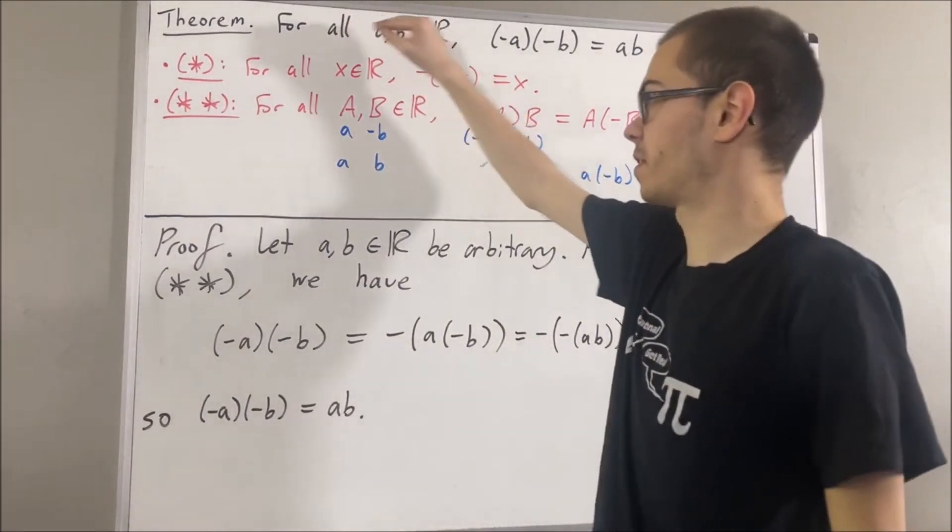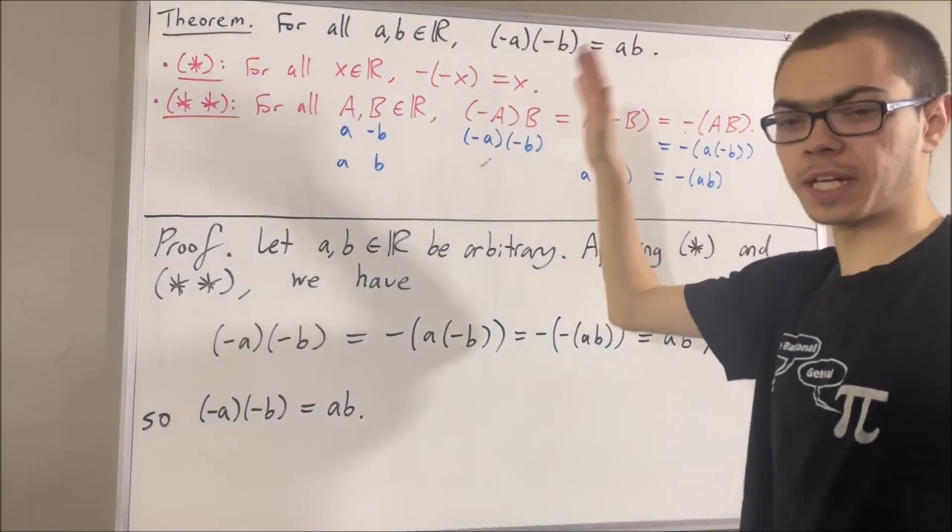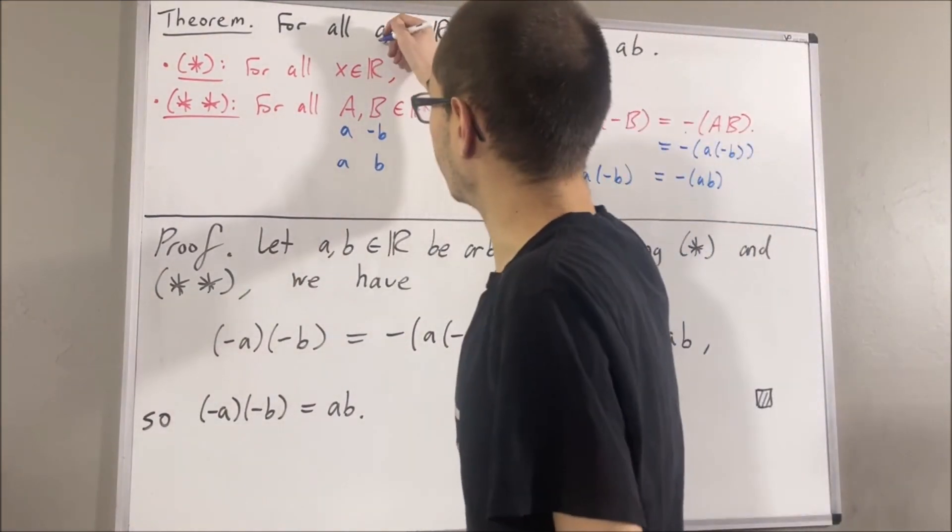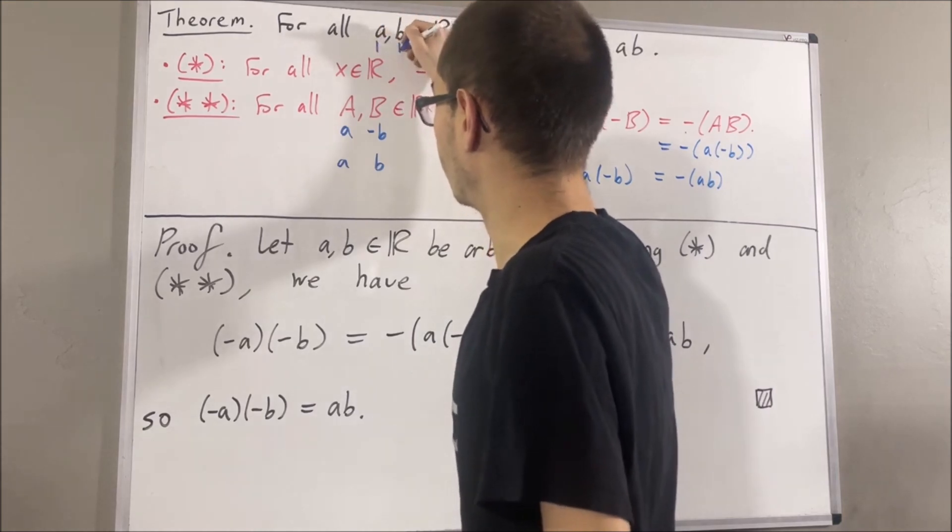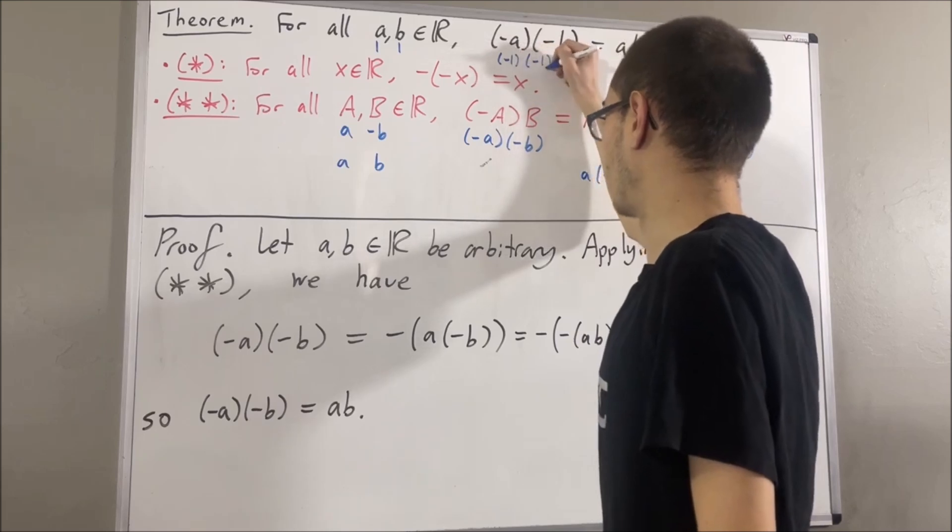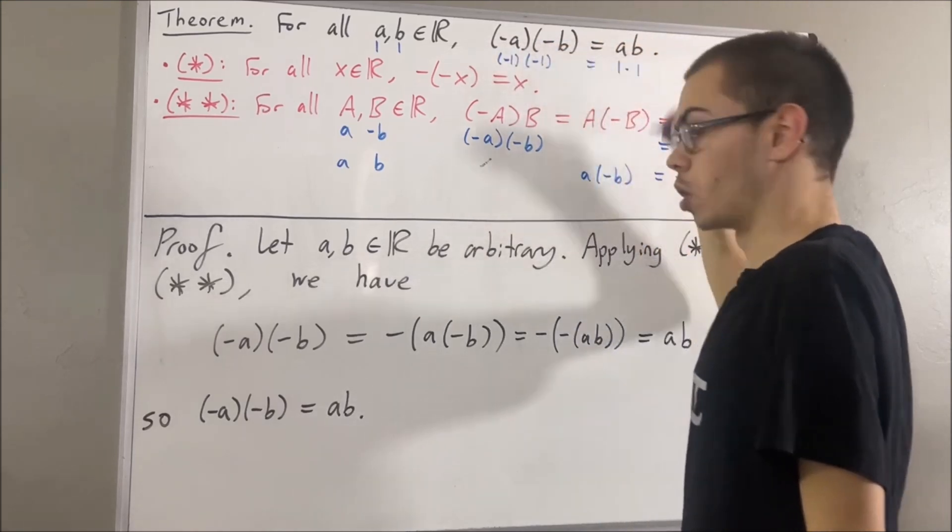And a corollary of this theorem is that negative 1 times negative 1 is equal to 1. Because if we take A to be 1 and B to be 1, well, then we have negative 1 times negative 1 is equal to 1 times 1.